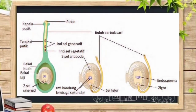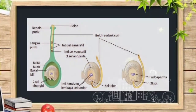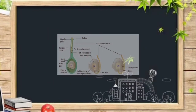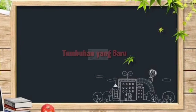Setelah penyerbukan terjadi, pada serbuk sari nanti akan tumbuh buluh serbuk sari yang menuju ke ruang bakal biji. Di ruang bakal biji itulah nanti akan terjadi pembuahan, di mana meleburnya serbuk sari sebagai sel kelamin jantan ke kepala putik sebagai sel kelamin betina. Hasil dari pembuahan itu dinamakan zigot. Pada zigot akan terbentuk lembaga yang kemudian berkembang menjadi bakal biji, lalu menjadi biji dan bakal buah, dan kemudian berkembang lagi menjadi daging buah. Lembaga yang berada dalam biji itulah yang nantinya akan menjadi calon tumbuhan yang baru.